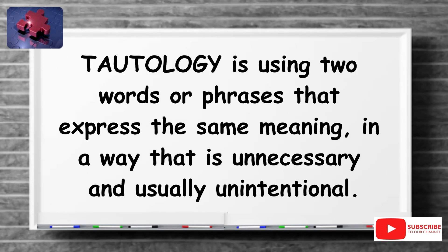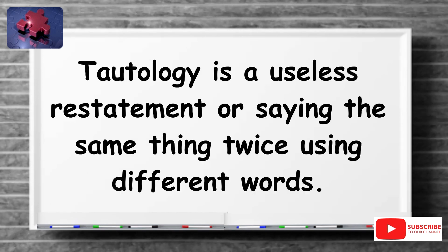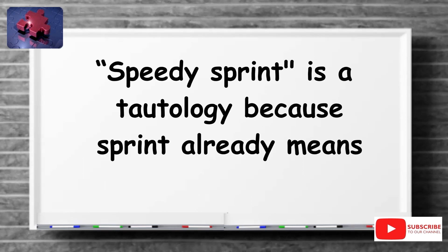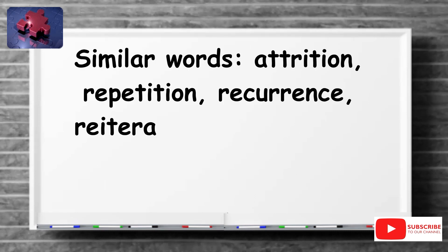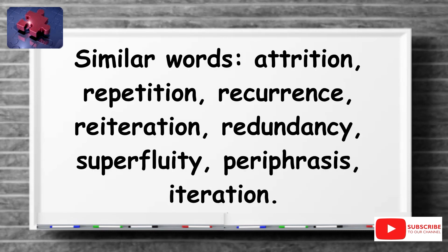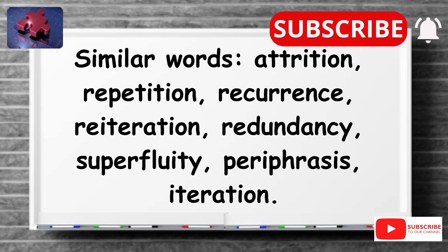Tautology is using two words or phrases that express the same meaning in a way that is unnecessary and usually unintentional. Tautology is a useless restatement, or saying the same thing twice using different words. 'Speedy sprint' is a tautology because 'sprint' already means speedy running. Similar words include attrition, repetition, recurrence, reiteration, redundancy, superfluity, peripheries, and iteration.